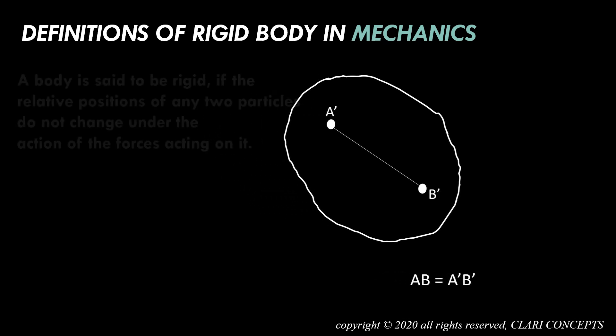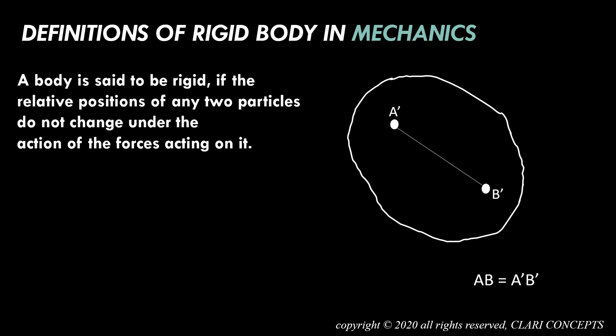So let me define it. A body is said to be rigid if the relative positions of any two particles do not change under the action of the forces acting on it. In the previous example that I used here, you could clearly understand it.